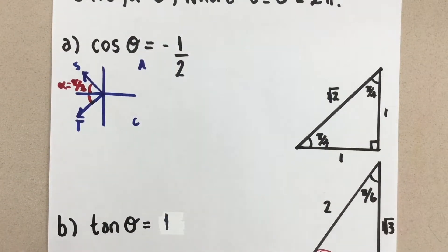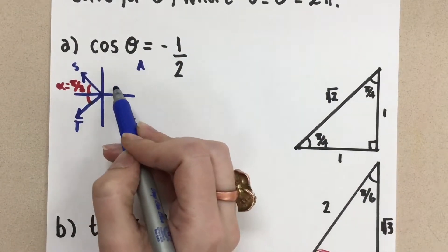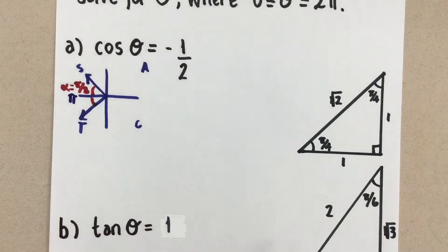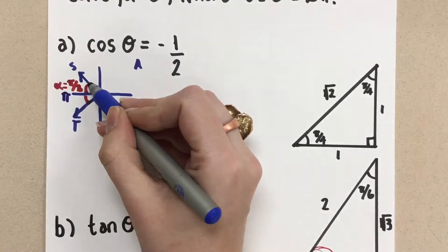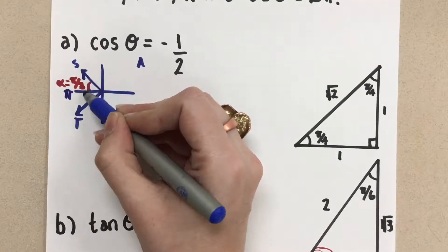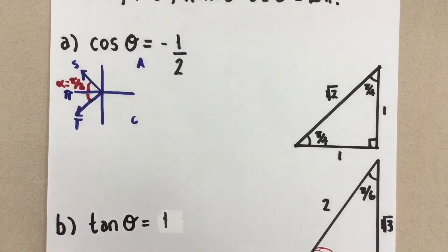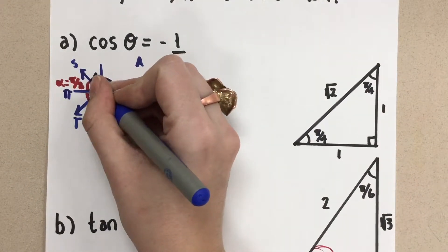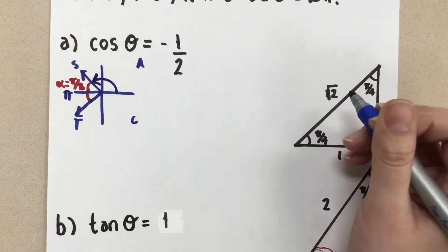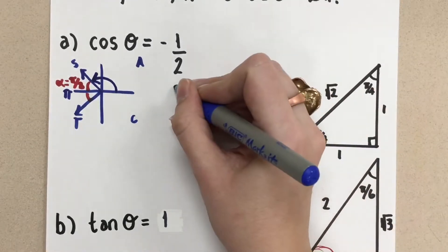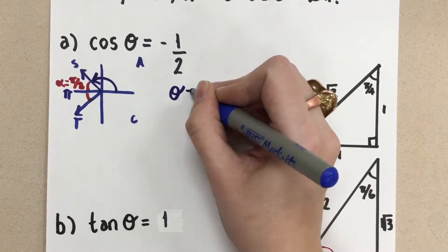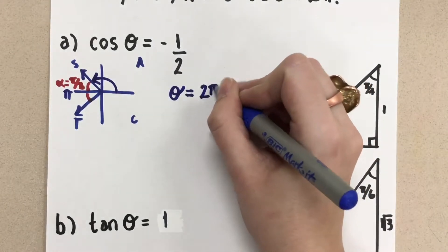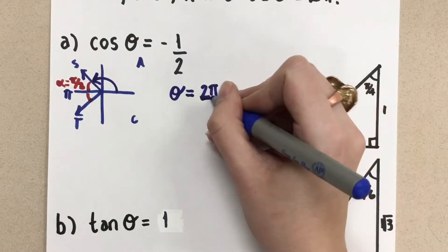So knowing in radians that halfway around the circle is one π, if this related acute angle here is one-third of π, then the principal angle from here to here must be two-thirds of π. So my first angle that will satisfy this relationship is 2π over 3.